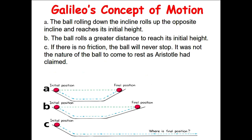Looking at the figures: in Figure A, a ball rolls down the incline, moves straight, then rolls up, reaching the same initial height. In Figure B, the ball again rolls down, speeds up, then rolls up with a smaller angle of inclination — so it travels more distance, but still reaches the same initial height. In Figure C, if there is no friction and the path is smooth, the ball will never stop. It's the nature of the ball to keep moving and not stop.